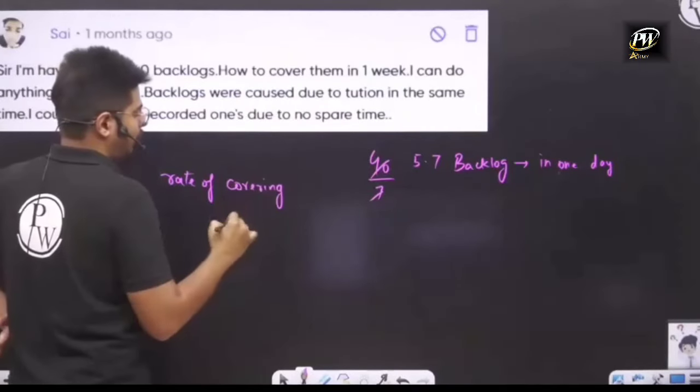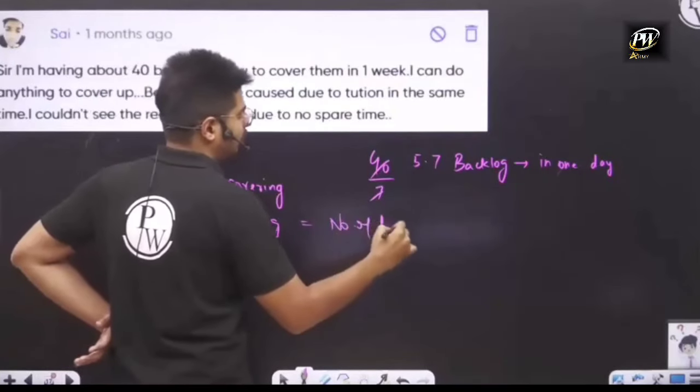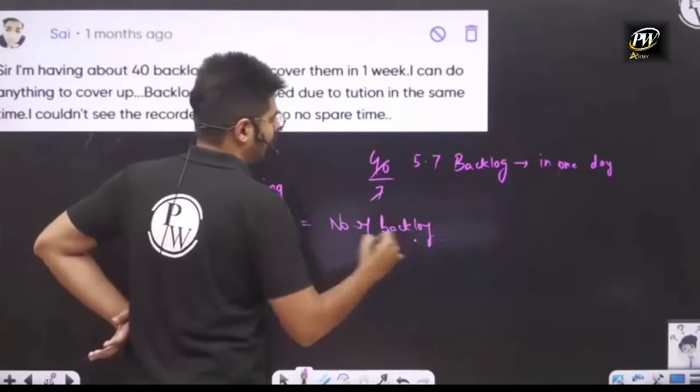Rate of covering backlog is equal to the number of backlogs divided by the number of days.